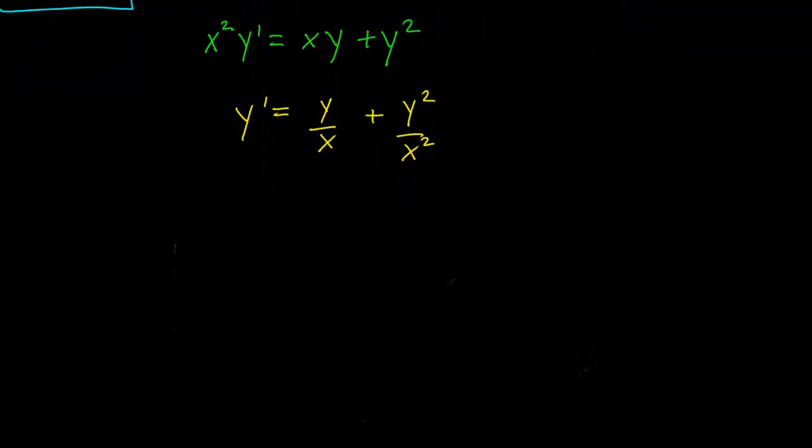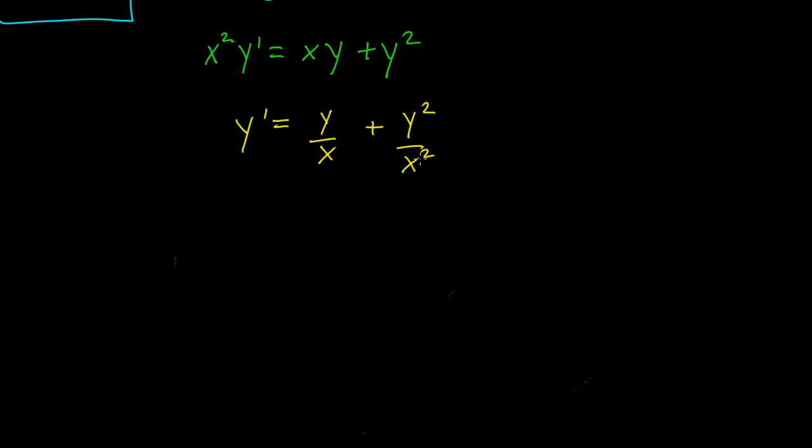And let's make a substitution. A very natural one to make is y over x of course. So let's write v equals y over x, which is equivalent to y equals vx. So let's take the derivative of both sides: y prime equals vx prime. Let's use the chain rule here.